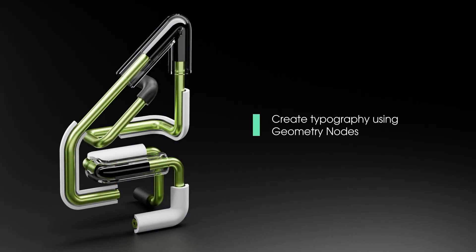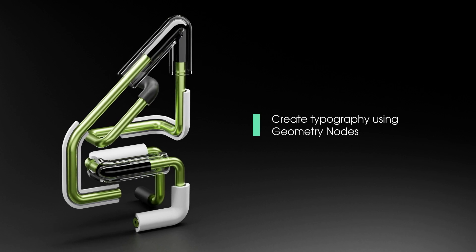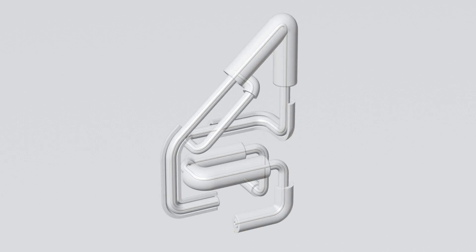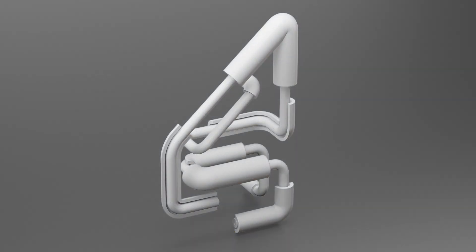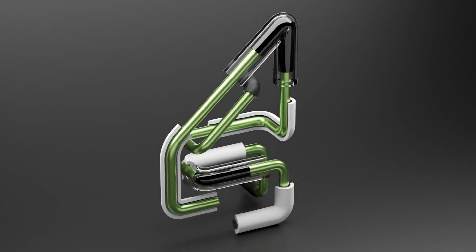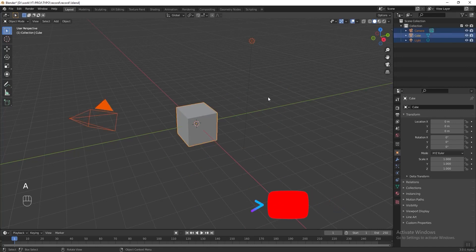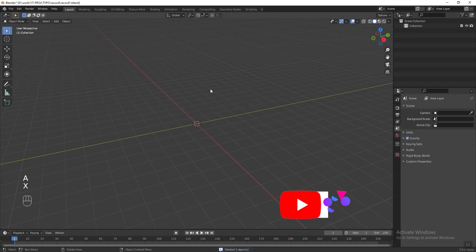Before we dive into Blender, let me go through what we are going to do in this tutorial. First we are going to draw the curve, then we are going to build the basic shape on the curve using geometry nodes and add more details onto it. Next we are going to add lighting, material, and set up the camera to finish the scene. So without further ado, let's get started — select all and delete everything.